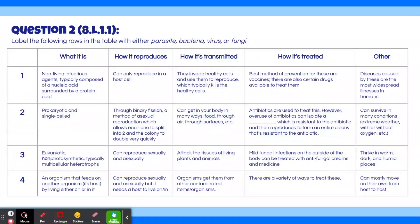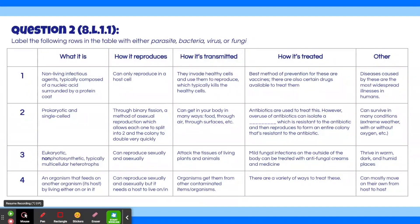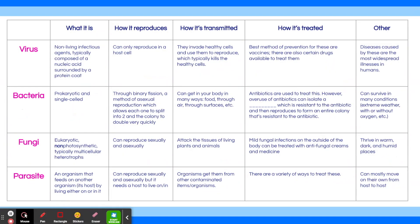Question 2: Label the following rows in the table with either parasite, bacteria, virus, or fungi. Go ahead and pause the video here so you can take time to read the table. The answers are: the first row is virus, second bacteria, third fungi, and fourth parasite. If you got that right, go ahead and skip to the next question. Otherwise, let's talk about how we figure out which row is which microorganism.